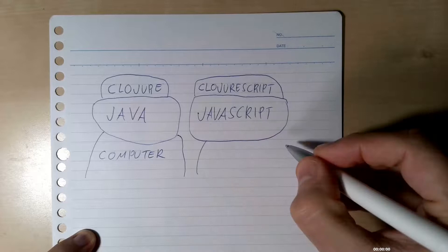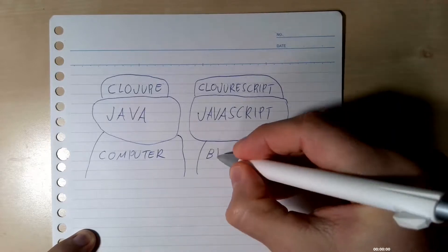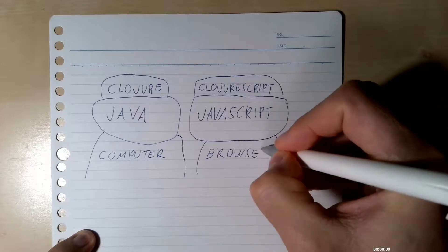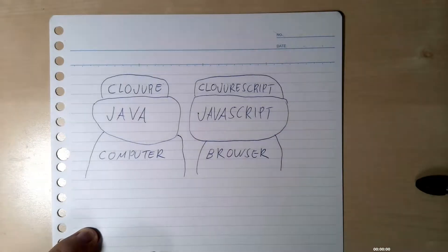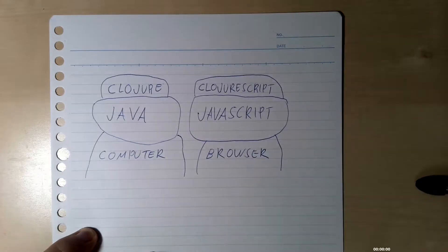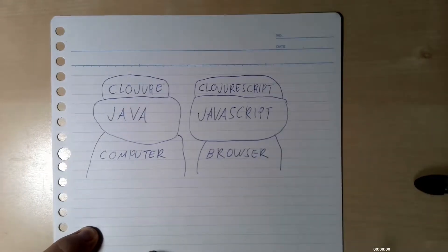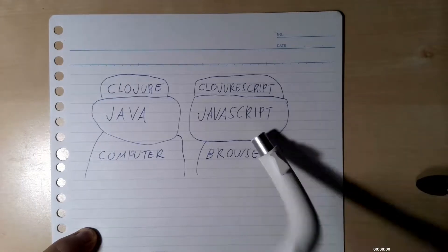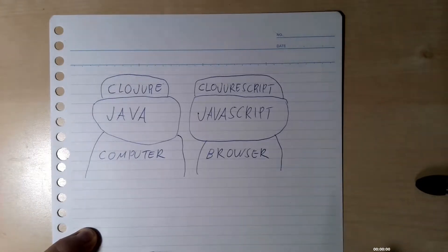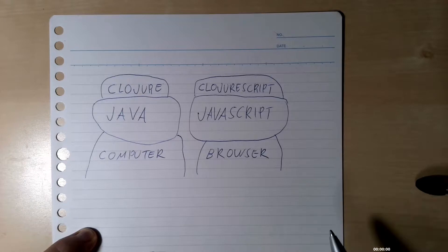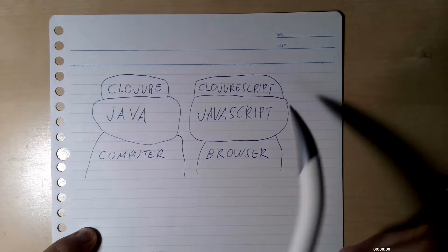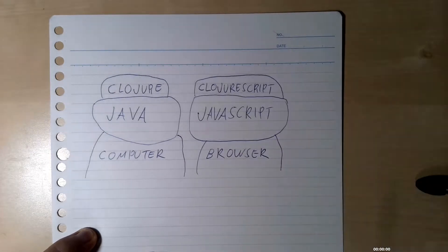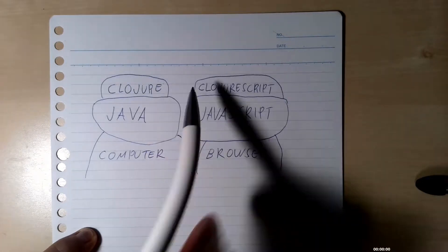JavaScript runs in the browser. It was the language created for the web — a quick idea to have something for the browser — and it wasn't the best-designed language ever, but now it's everywhere and probably the most popular language. It's not rare to have another language built on top of it.